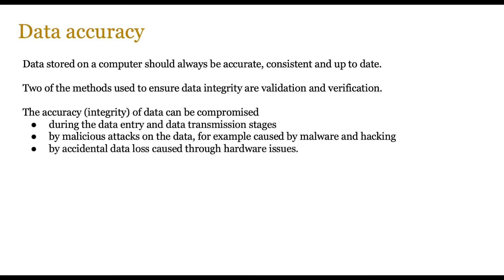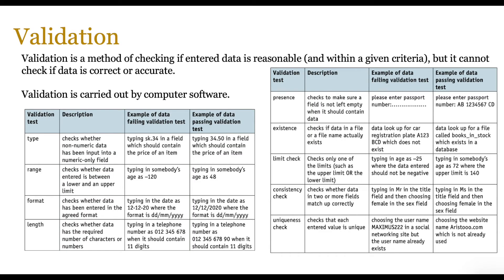So let's look at validation first. Data validation is a method of checking if entered data is reasonable and within a given criteria, but it cannot check if data is correct or accurate. An example could be that when you're entering colors, brown is an acceptable value, but if the person actually likes blue and you've entered brown, that is inaccurate. So it just checks if the data is reasonable, but it doesn't check for full accuracy. It's very difficult to do that.